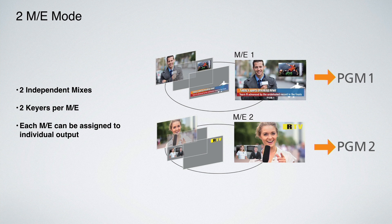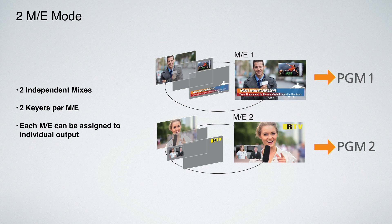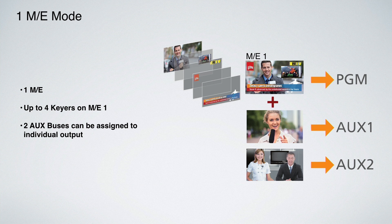Let's talk about the different ME modes. In 2ME mode you get two independent mixes, two keyers per ME, and each ME can be assigned to an individual output. In 1.5ME mode you get an ME plus a program preview bus, and on ME1 you get up to four different keyers. You can also take the re-entry of ME1 and put it to the program preview bus. There's also a 1ME mode which gives you four keyers on ME1 plus two aux buses that can be assigned to an individual output.